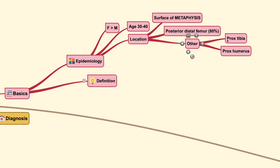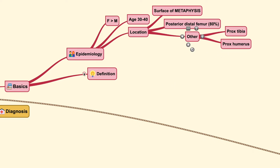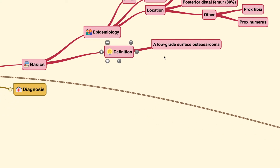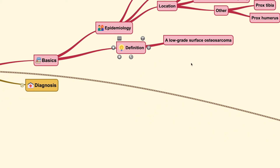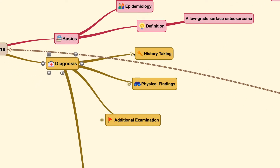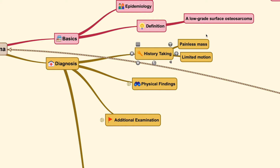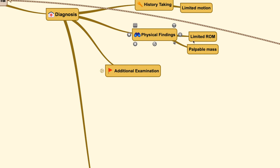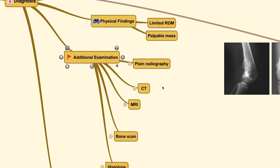Other locations include the proximal tibia and proximal humerus. It is considered a low-grade type of osteosarcoma that grows on the surface. For the history taking, it is sometimes painless because this low-grade tumour induces little body reaction. The patient's complaints may be limited motion due to the mechanical effects of the mass over the joint, so patients may come with limited range of motion and a palpable mass.